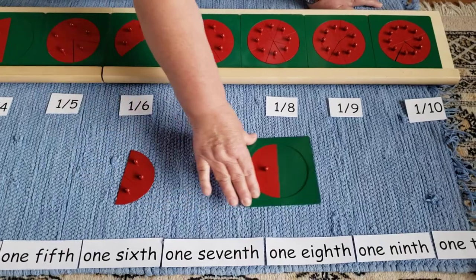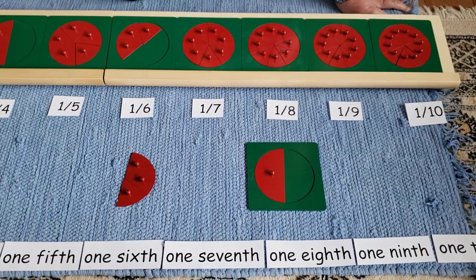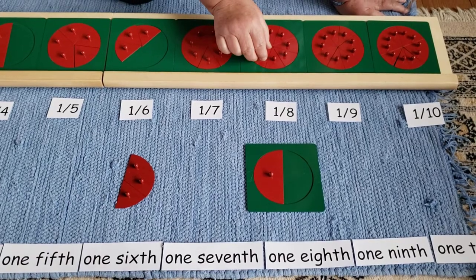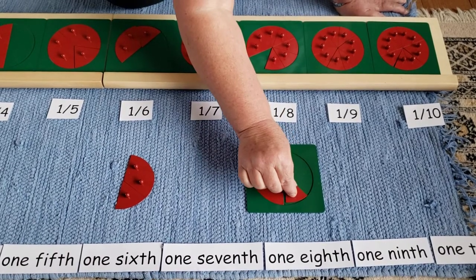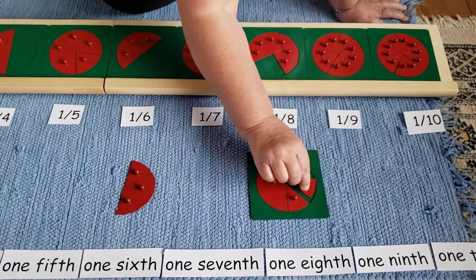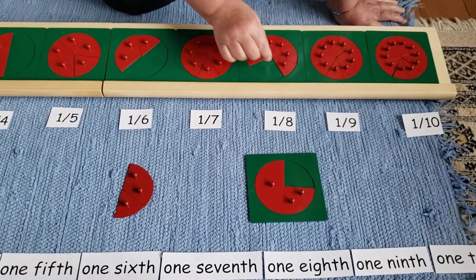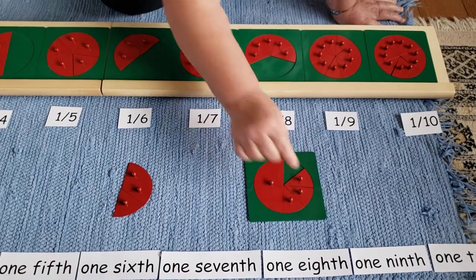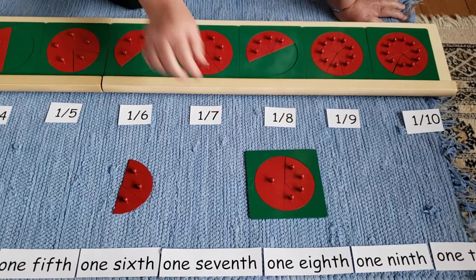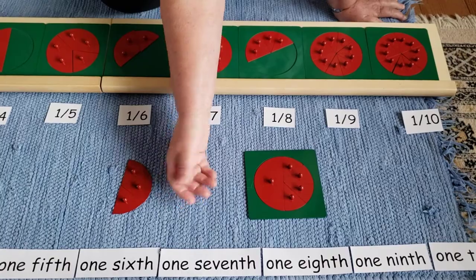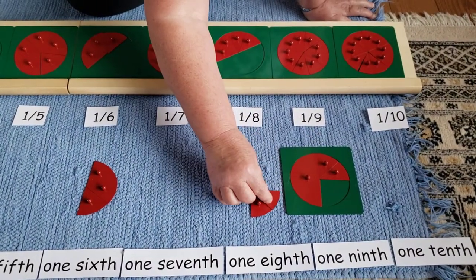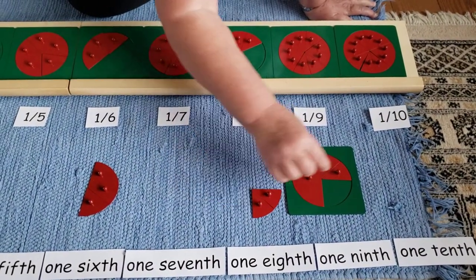Can we make an equivalent fraction with one half using eighths? Let's see. One eighth, two eighths, three eighths, four eighths. Four eighths works! Let's slide this over and put those four eighths right underneath so you can see it.